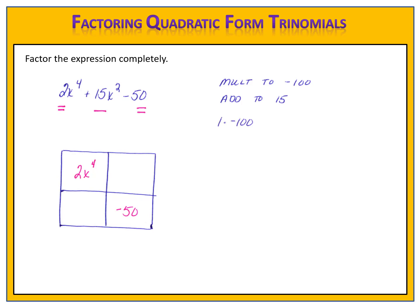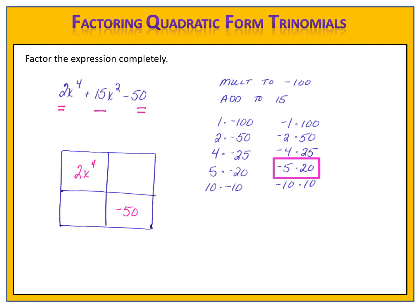1 times negative 100, or negative 1 times 100. 2 times negative 50, or negative 2 times 50. 4 times negative 25, or negative 4 times 25. 5 times negative 20, negative 5 times 20, 10 times negative 10. I'm looking for the pair that adds to 15. Negative 5 and 20 — those are the numbers I'll use in the other two boxes.